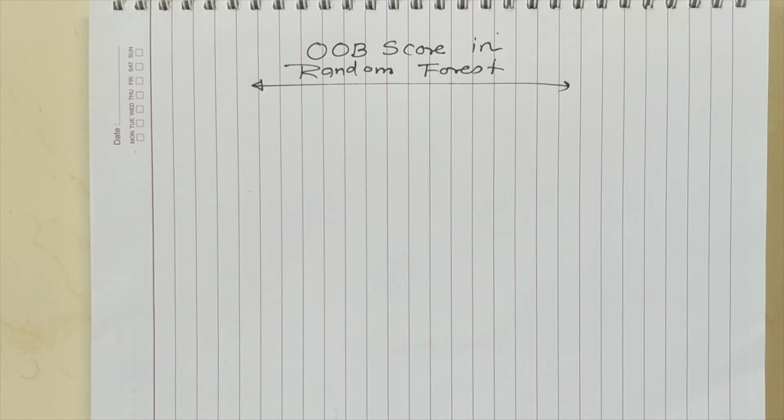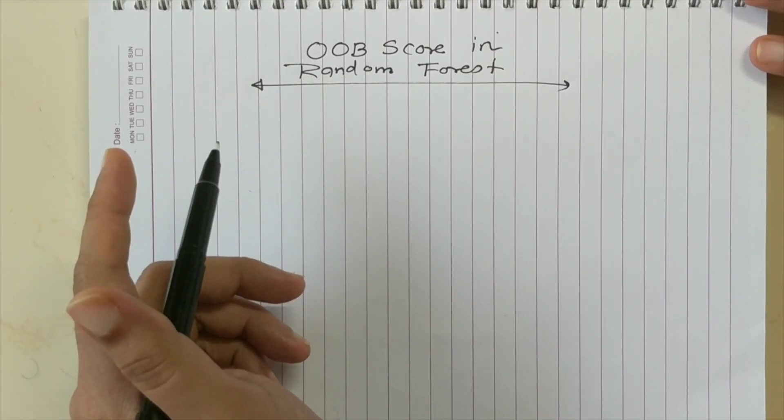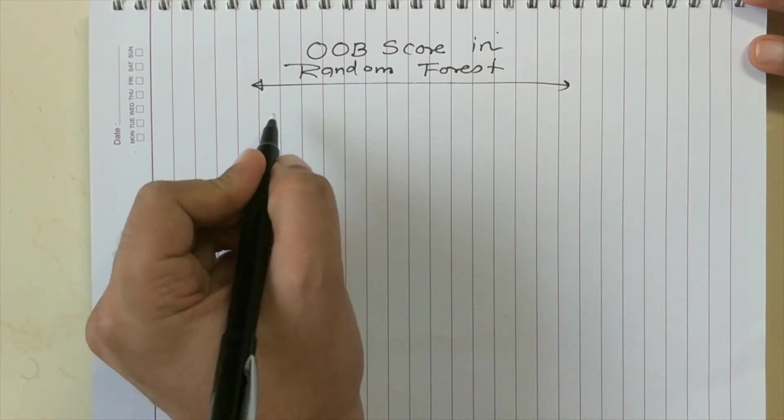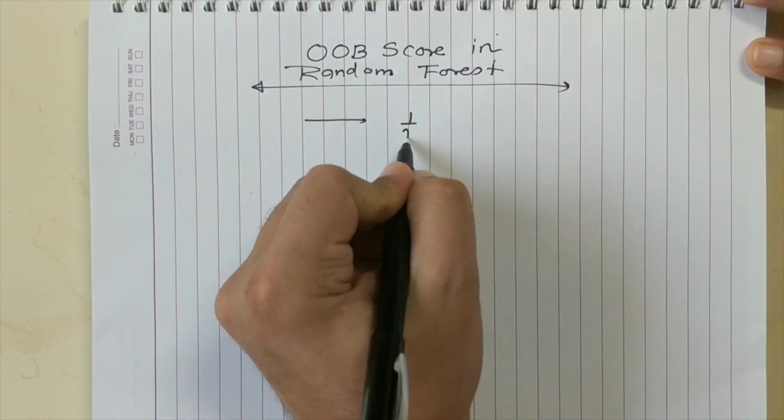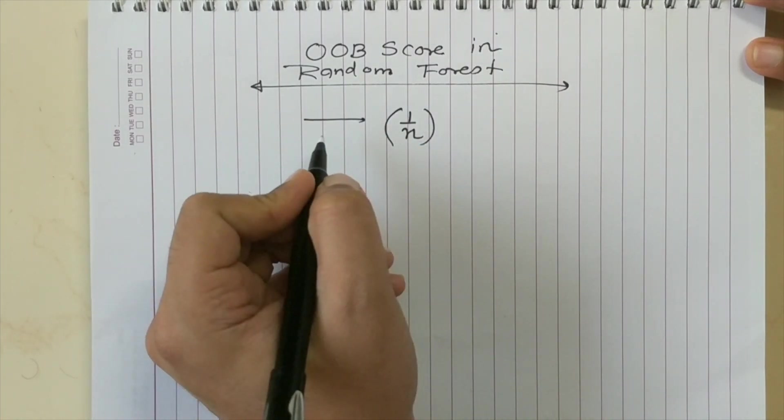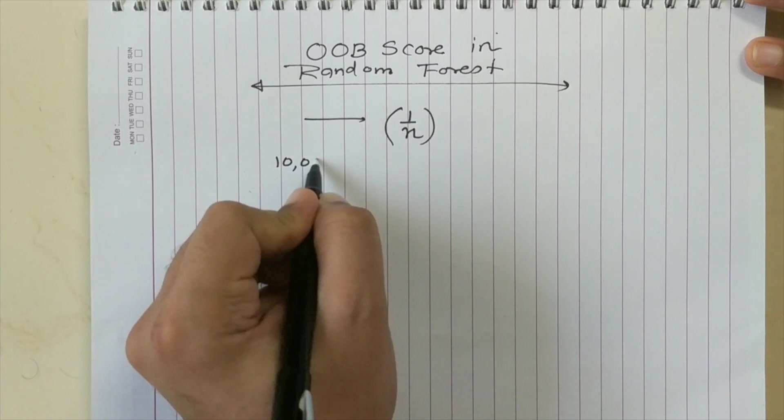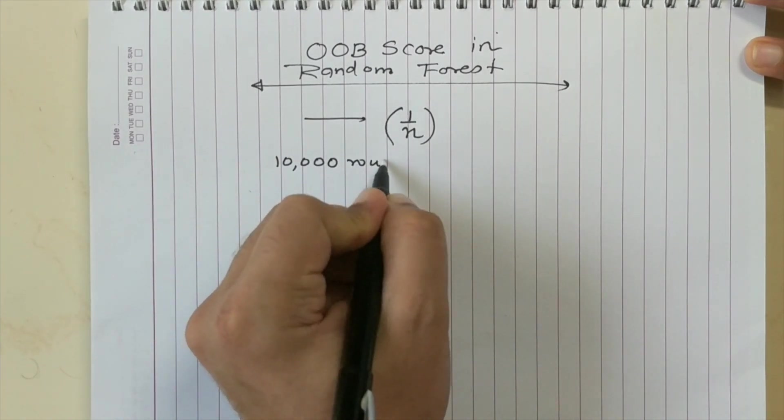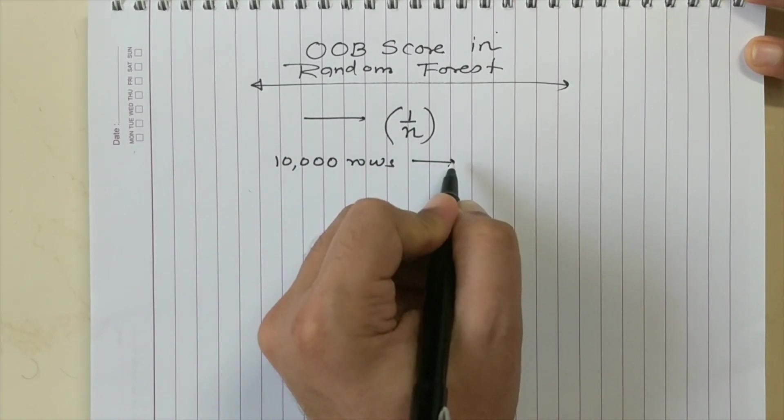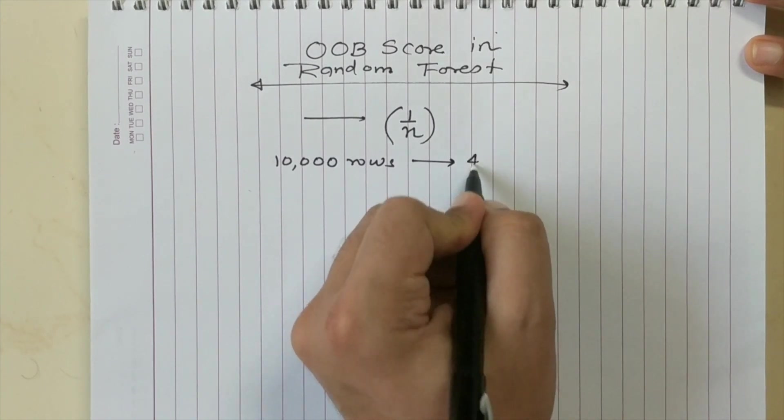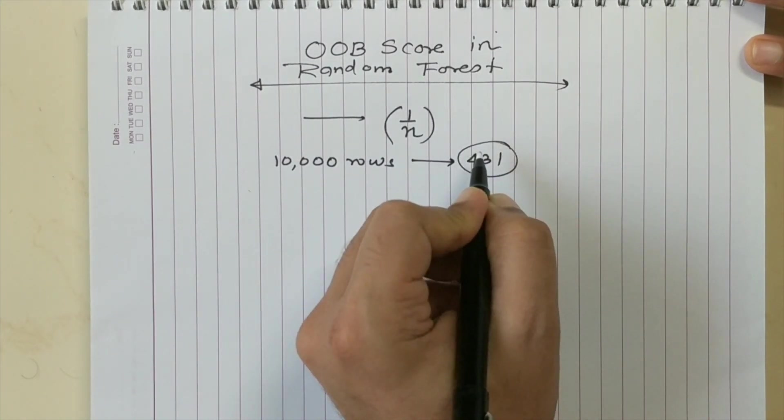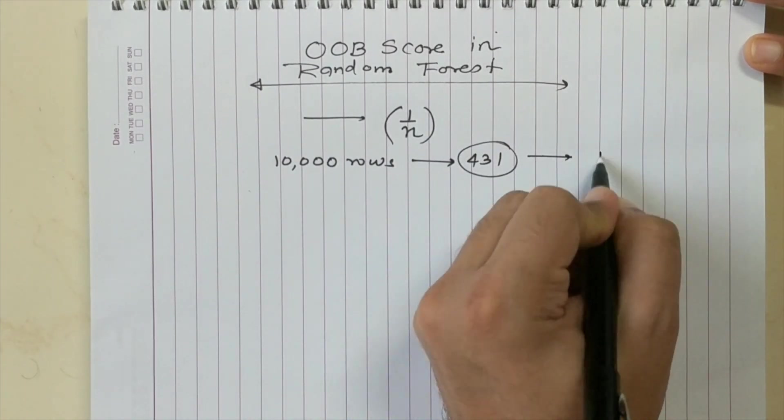Let's say probability of selecting a row as a bootstrap sample is 1 by N where N is the total number of rows. If I have 10,000 rows, then the probability of selecting that one row, say for example row number 431, into a bootstrap sample is 1 by 10,000.